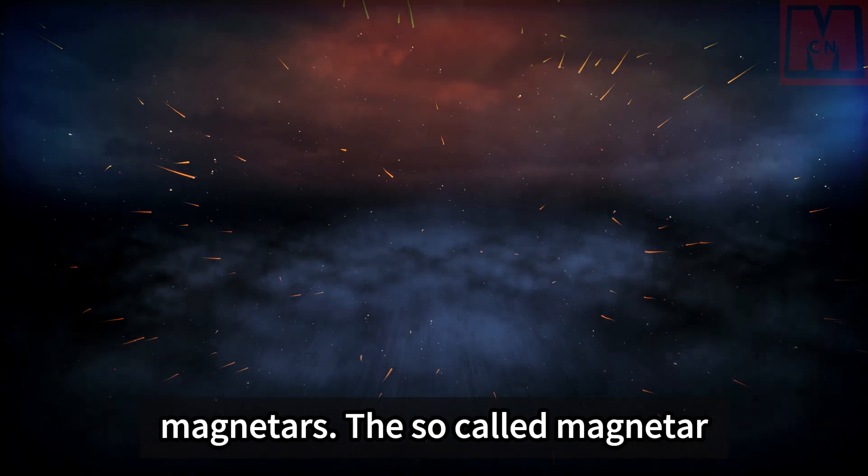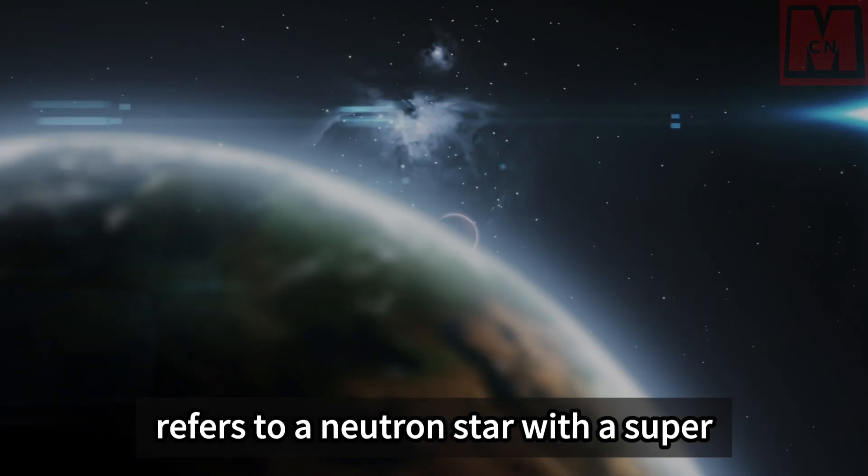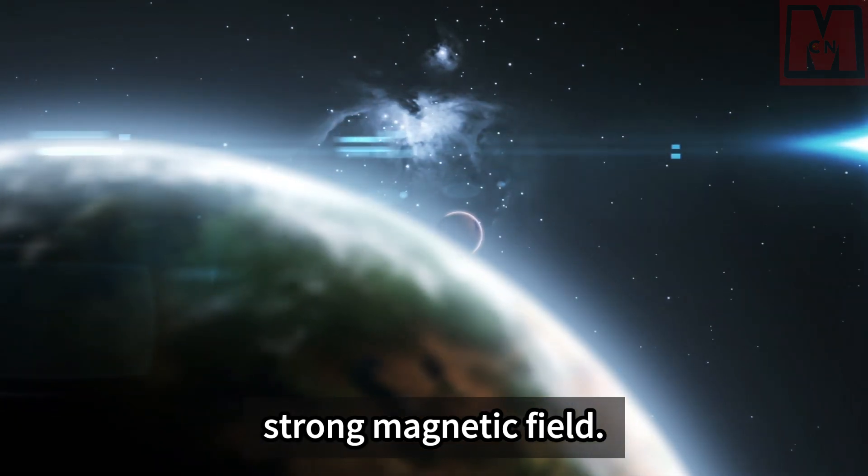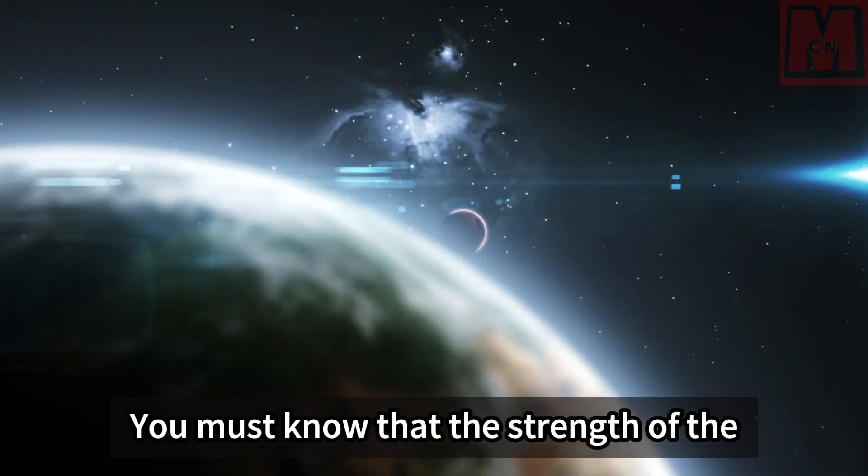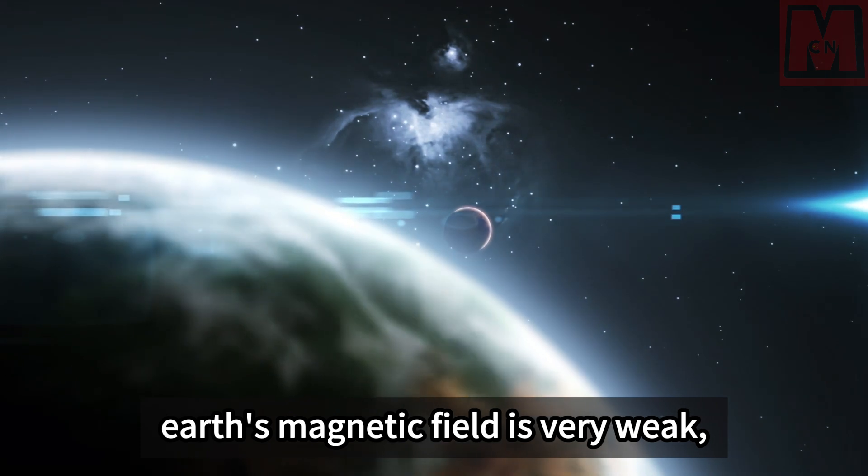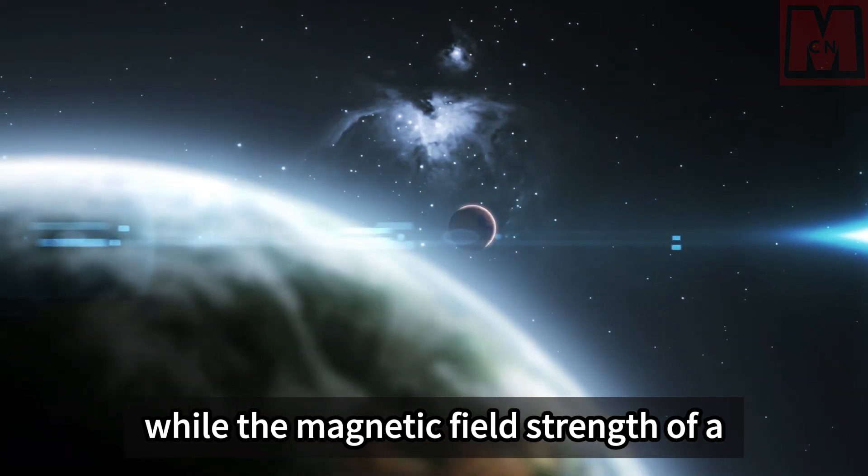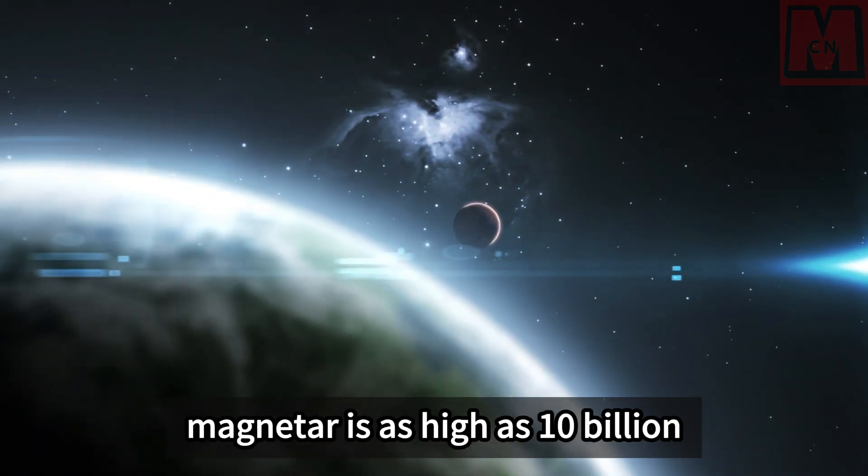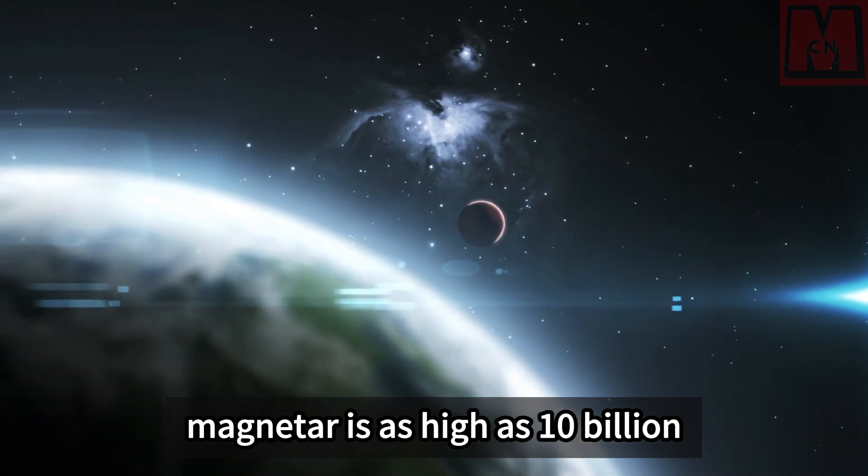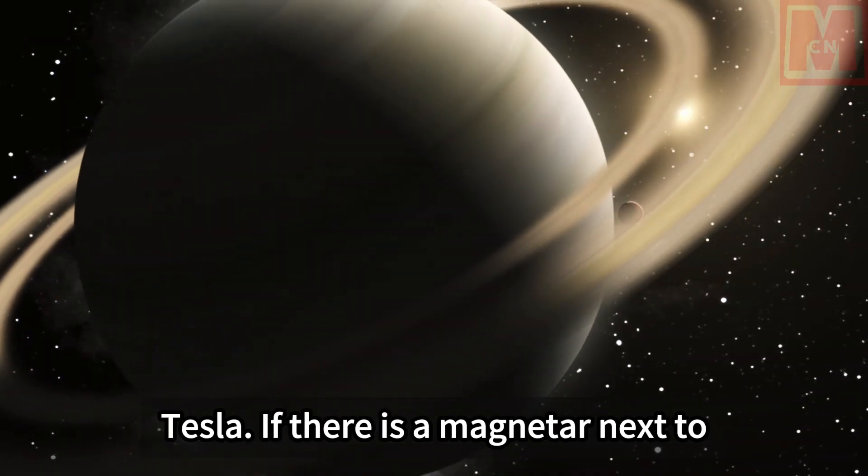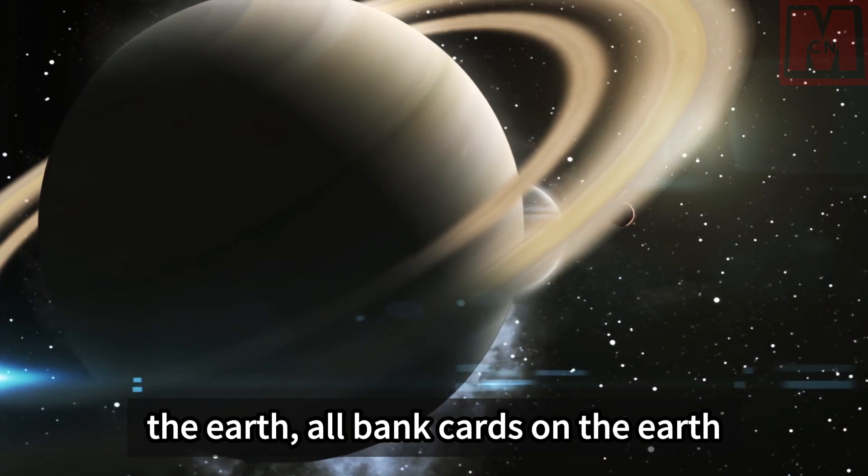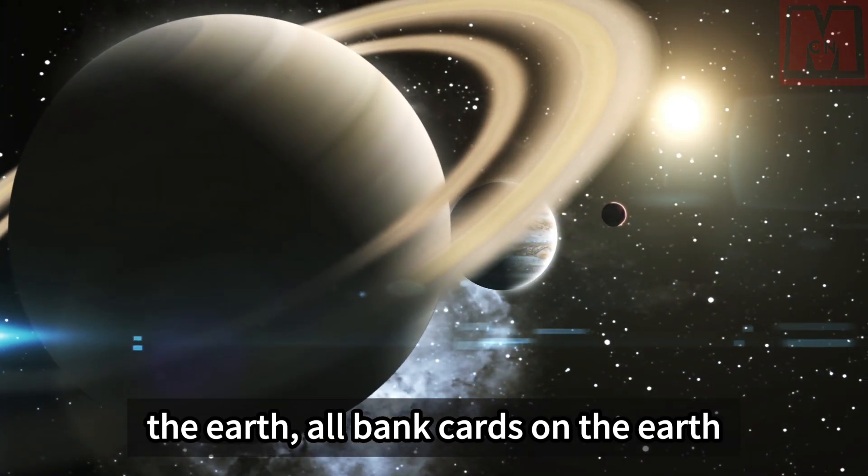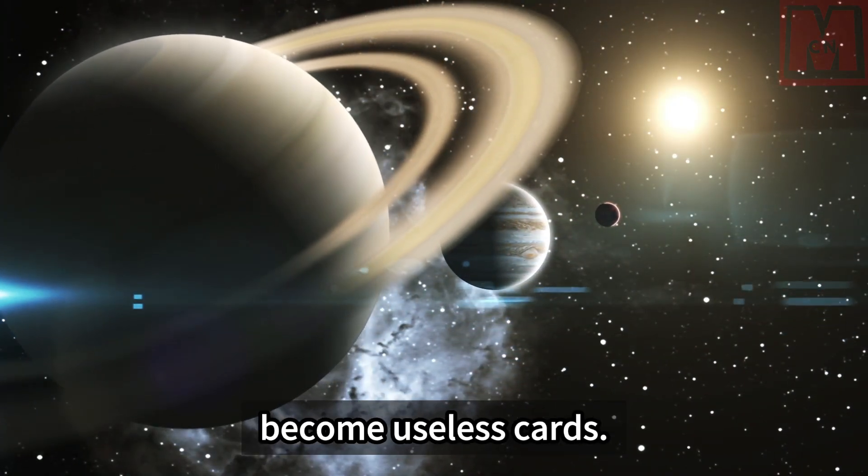You must know that the strength of the Earth's magnetic field is very weak, while the magnetic field's strength of a magnetar is as high as 10 billion Tesla. If there is a magnetar next to the Earth, all bank cards on the Earth may be degaussed and become useless cards.